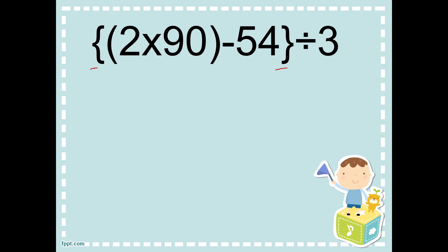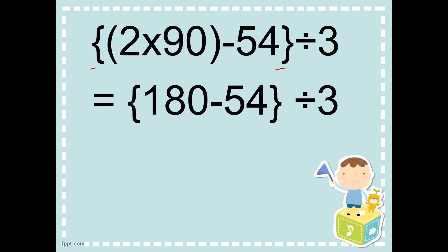So, what do we solve first? We prioritize what's inside the parenthesis. Two times ninety equals 180. So, we still have a bracket sign remaining. So, instead of division, we prioritize the subtraction. So, 180 minus 54 equals 126 divided by three. Now, we no longer have grouping symbols, so we can proceed with the division. One hundred twenty-six divided by three equals forty-two. So, the answer is forty-two.